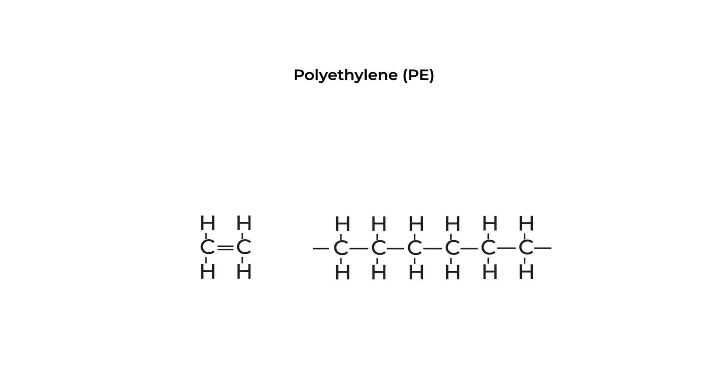This is reacted together in the proper conditions to give us this, our polyethylene chain. Our backbone is our carbon, and our side groups are single hydrogen atoms. Therefore, our repeating group looks like this.